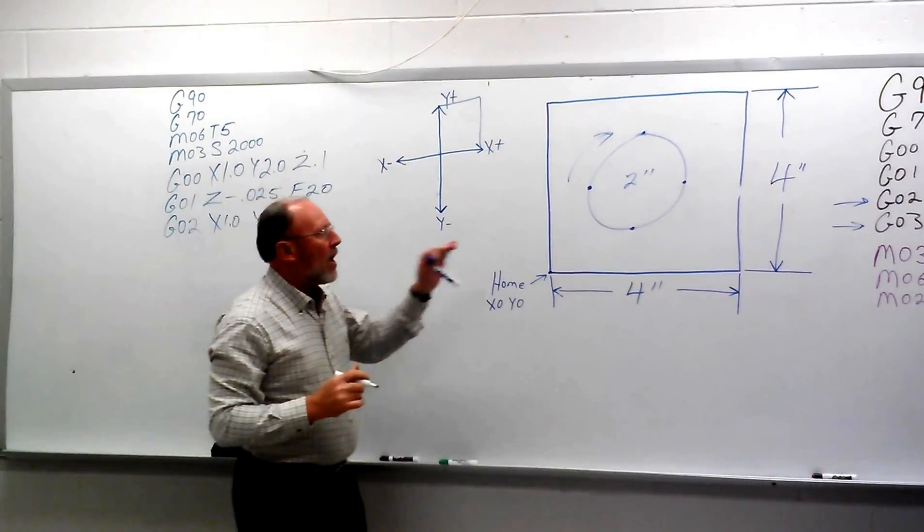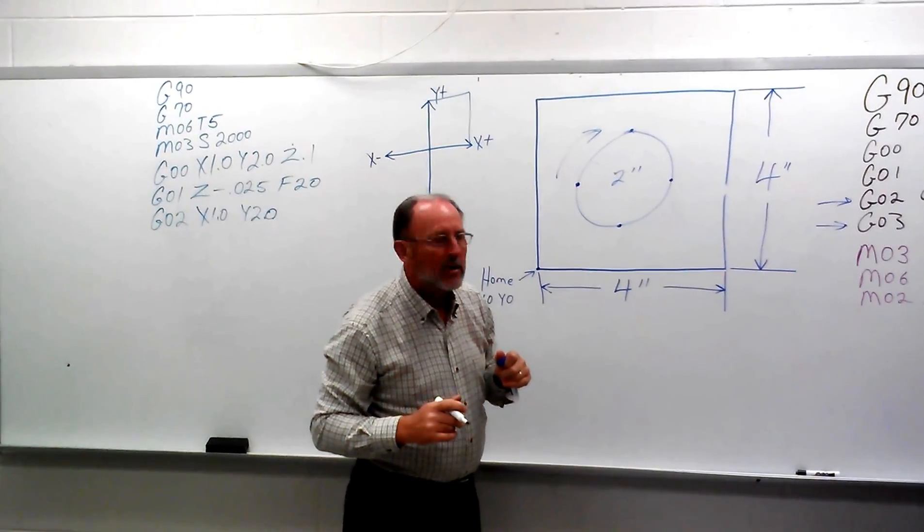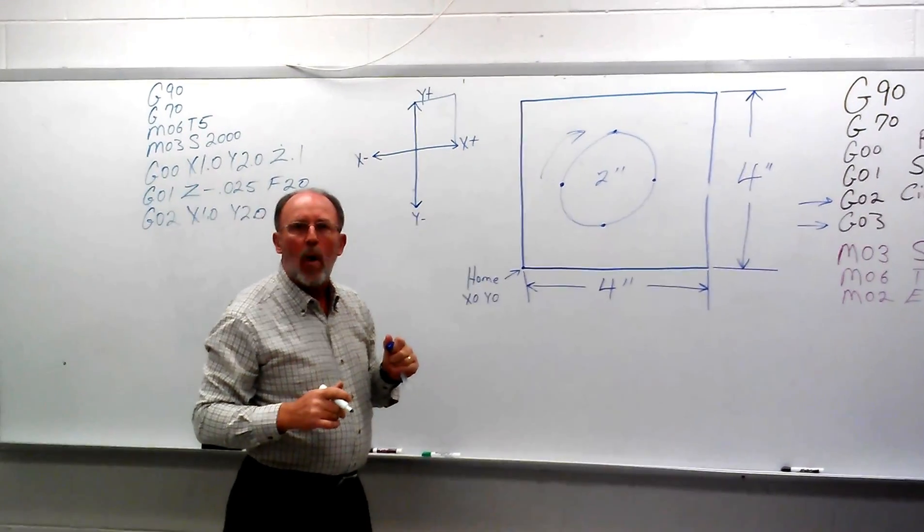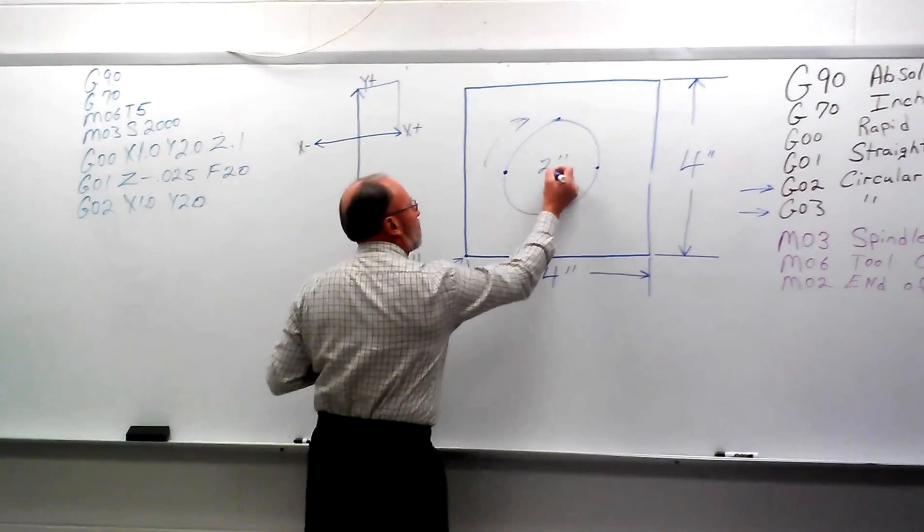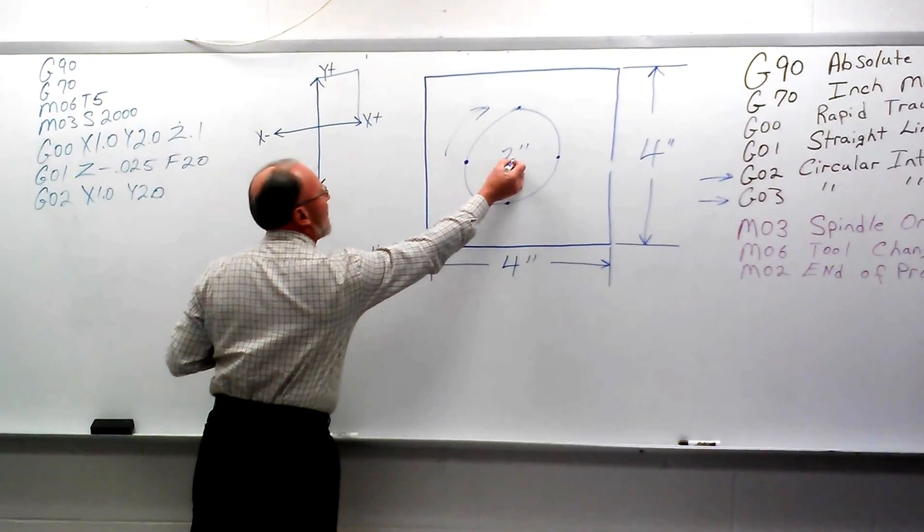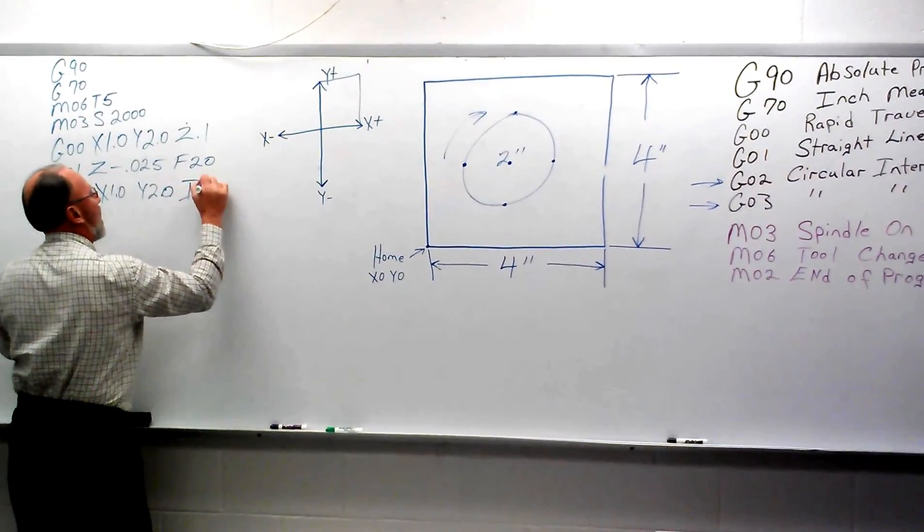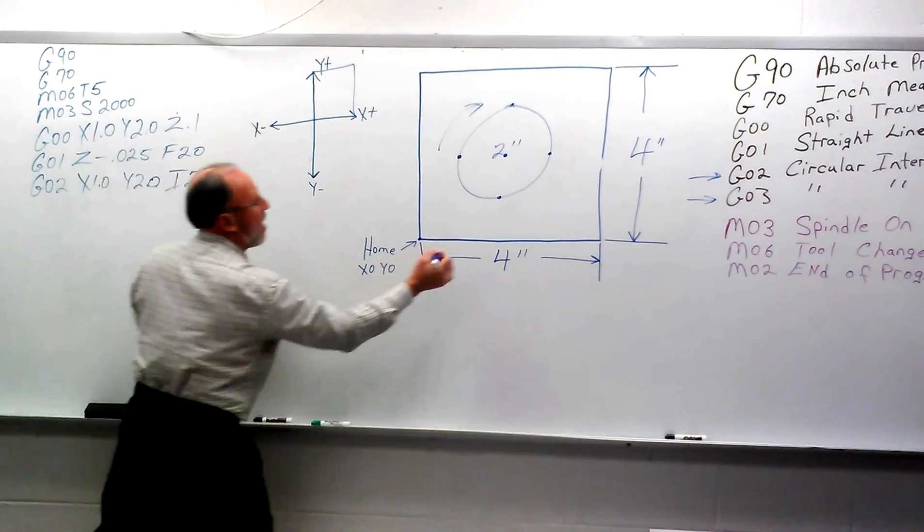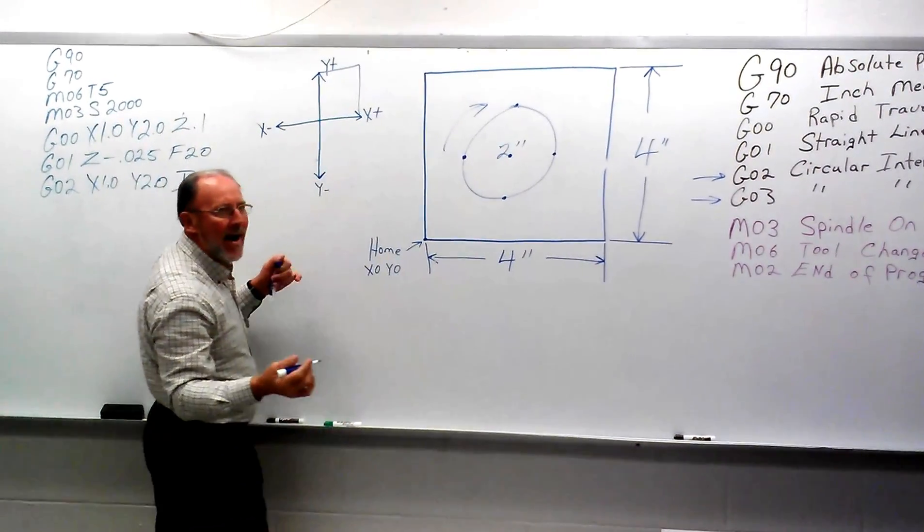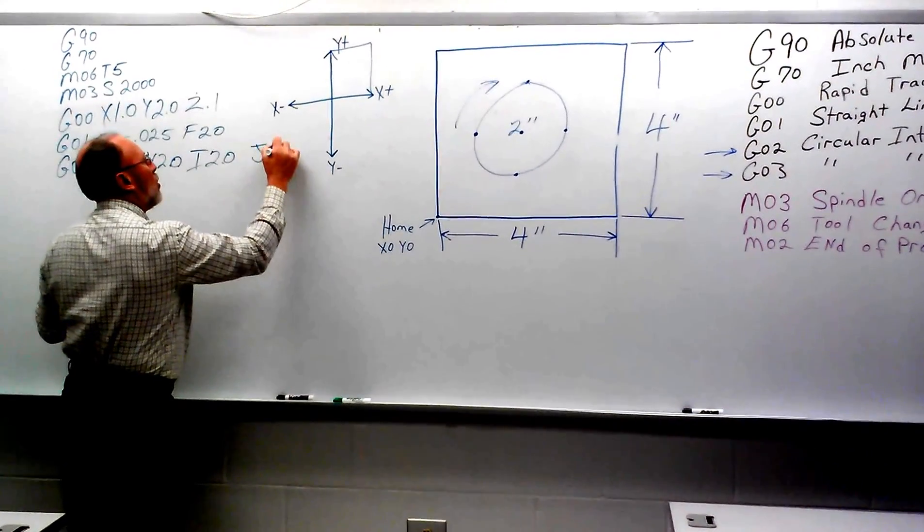Now the way we work the arcs is I is the center for X and J is the center for our Y axis. So here's the center here. So from here to here, my X axis is going to be 2. So that's what I would be, I2.0. And from here to the center in my Y axis would also be 2. And so that would be J2.0.